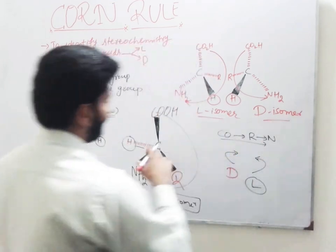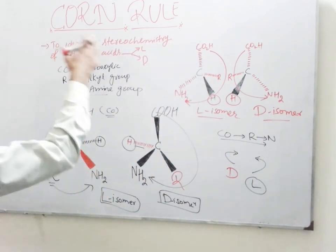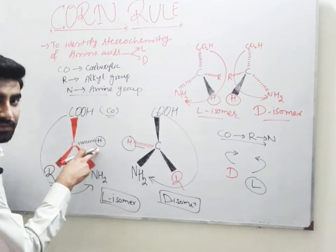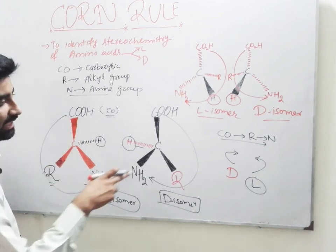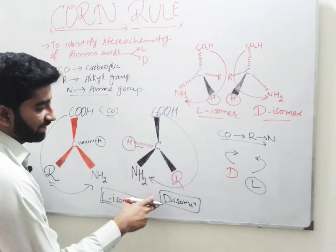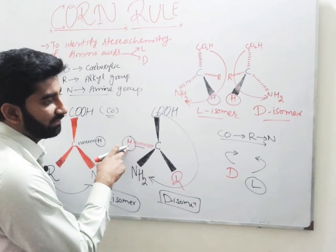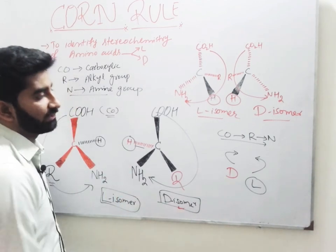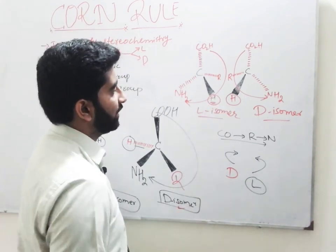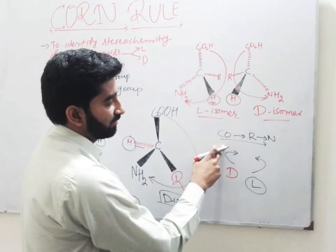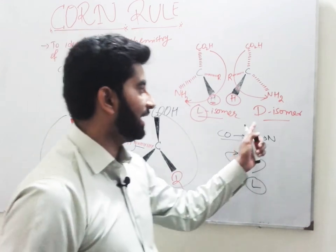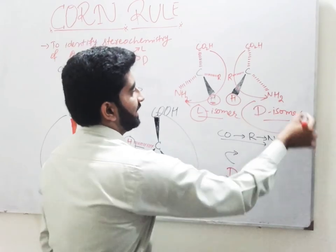These are the two different cases in which we apply the CON rule to identify the stereochemistry of the amino acid. If hydrogen is directed away from the observer and the rotation is anticlockwise, it is L isomer; if clockwise, it is D isomer. In compounds where hydrogen is directed towards the observer via a wedge bond, if the rotation is clockwise it is L isomer, and if anticlockwise it is D isomer.